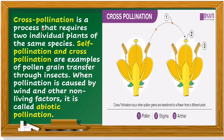Cross-pollination is a process that requires two individual plants of the same species. When pollination is caused by wind and other non-living factors, it is called abiotic pollination. In cross-pollination, pollen is blown from one plant to the stigma of another plant. It occurs when pollen grains are transferred to a flower from different plants.